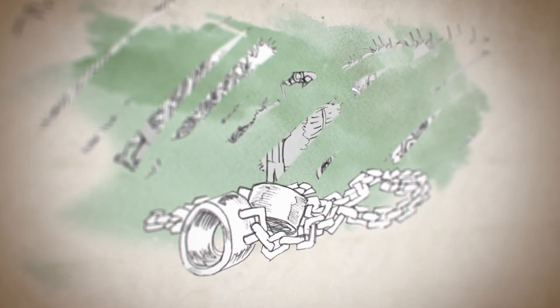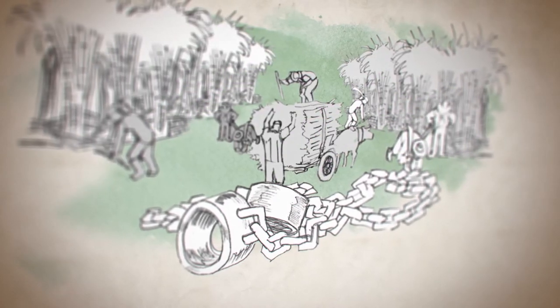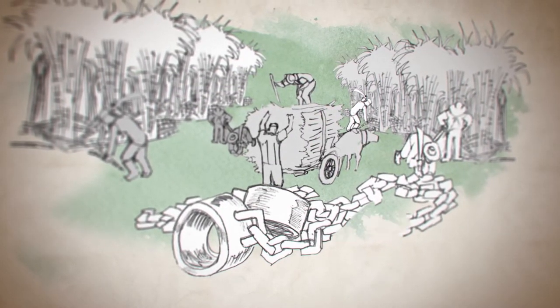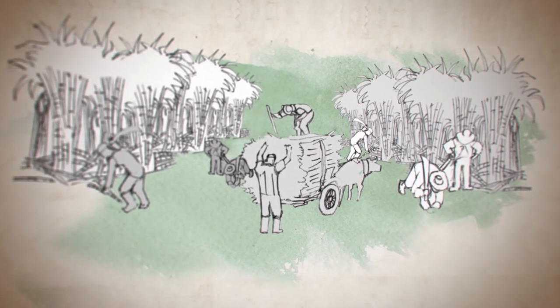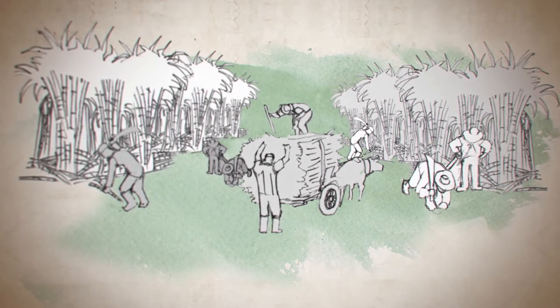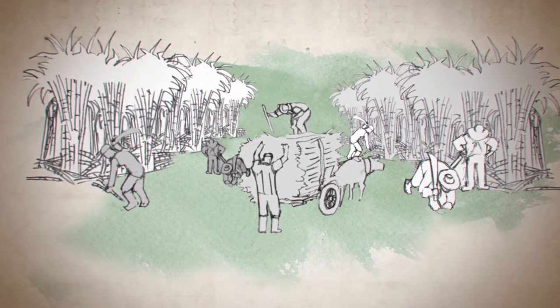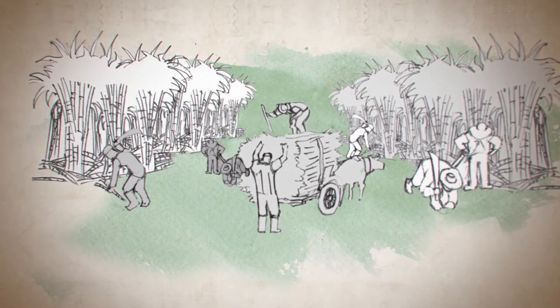Sugar and cheap labor are the mainstay of the national economy. And while it's almost a century since the emancipation of slavery, equal opportunity and access to services are still a long way off for the working class. But this was all about to change.